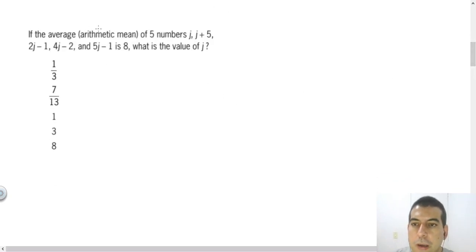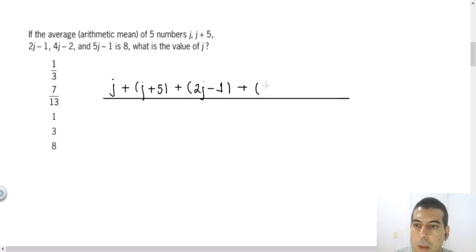In order to find an arithmetic mean, we just need to sum all the numbers and divide by the amount of numbers. As the question told us, the numbers are j, j plus 5, 2j minus 1, plus 4j minus 2, finally plus 5j minus 1, and we will divide those five numbers by 5, because 5 is the amount of numbers.